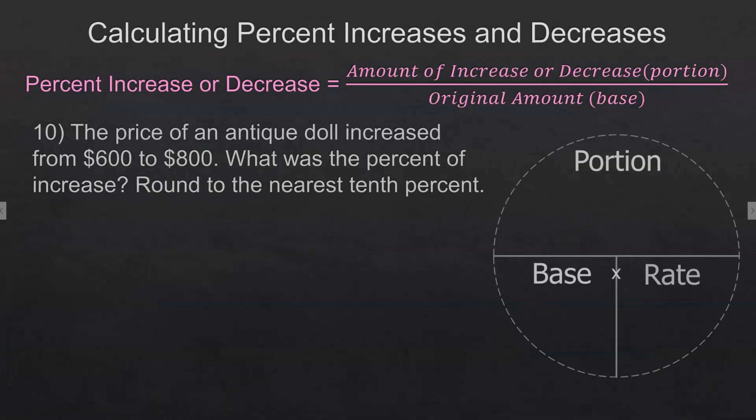This one's nice numbers. Remember, it's the percent of increase or decrease. We're going to take the amount of the increase or decrease and divide by the original amount, which is the base. The difference here is $200. So we take $200, we divide by the original price. It increased from 600 to 800. And so we're looking for the rate. We take 200 divided by 600. Remember, the original amount is the 600 because it increased.